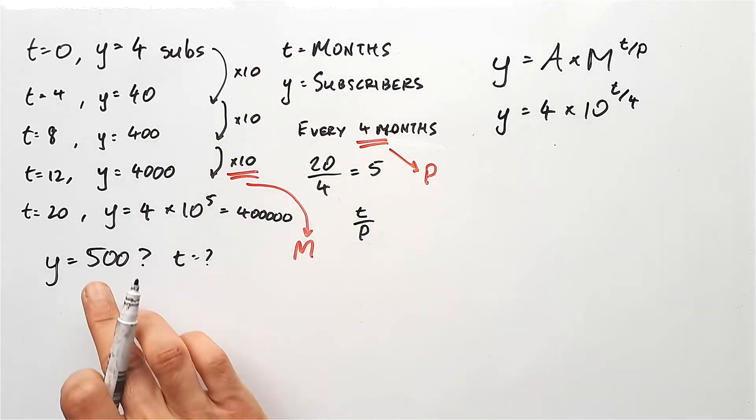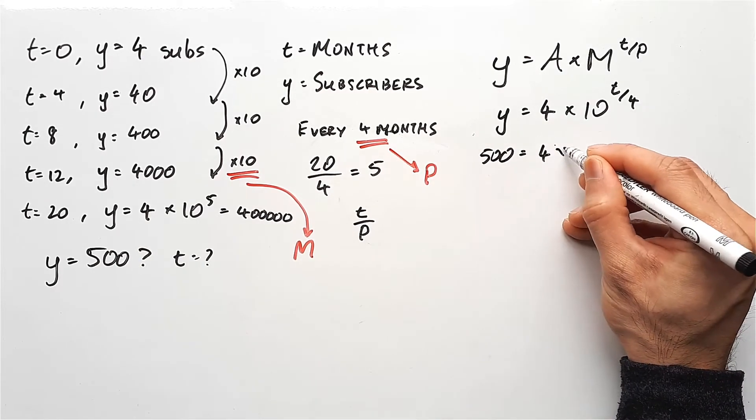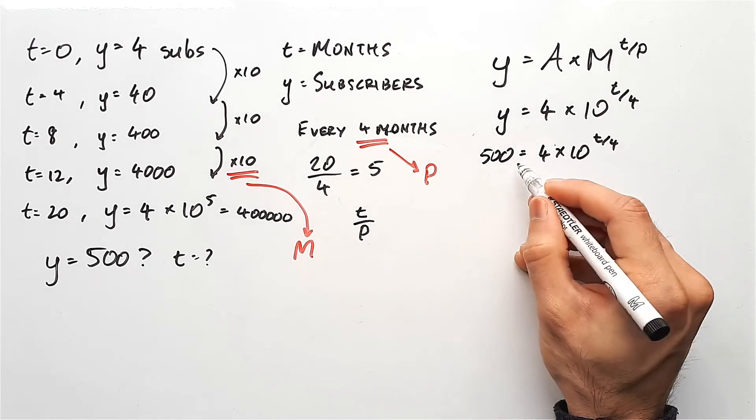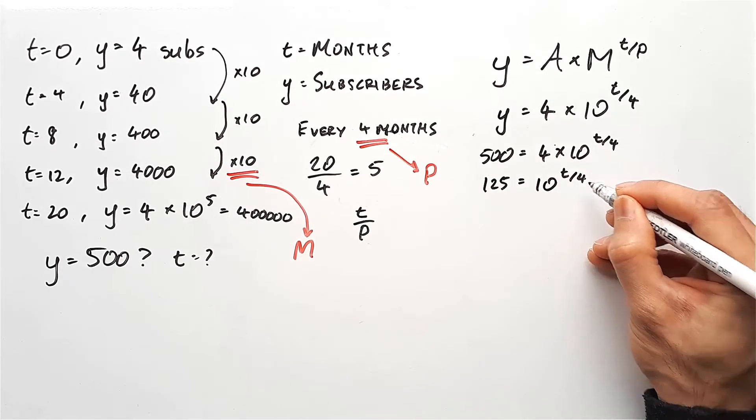Now that we have the equation, all we need to do is plug this value into this equation. So we'll say 500 equals 4 times 10 to the power of t over 4. And do a bit of rearranging. Divide everything by 4, 125 equals 10 to the power of t over 4.